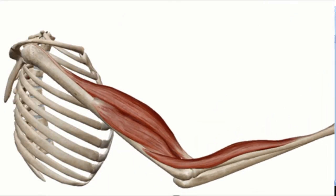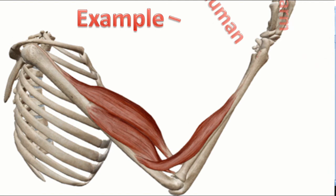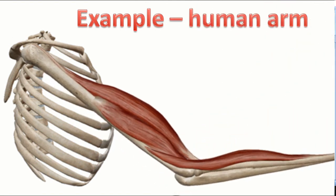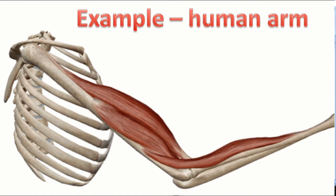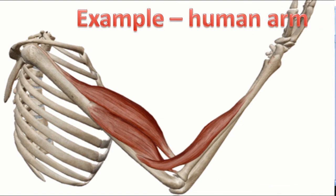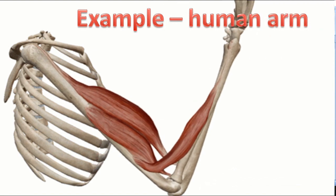Human arm is an example of third class lever. Here effort is applied at elbow from muscles. On one side load and on the other side fulcrum.